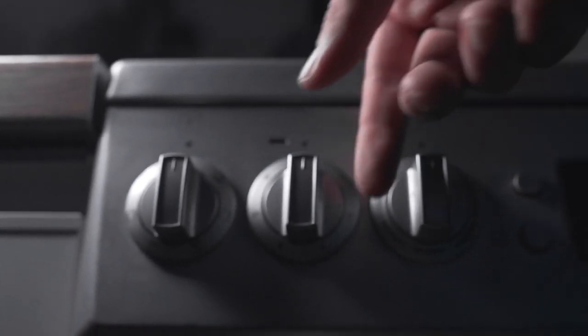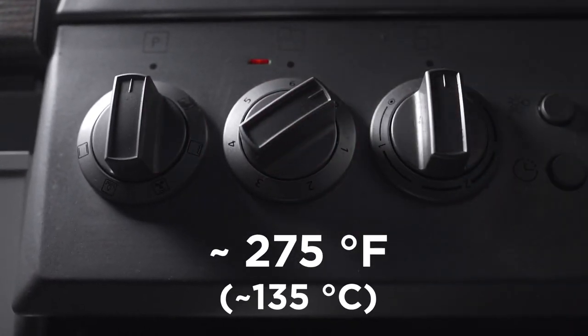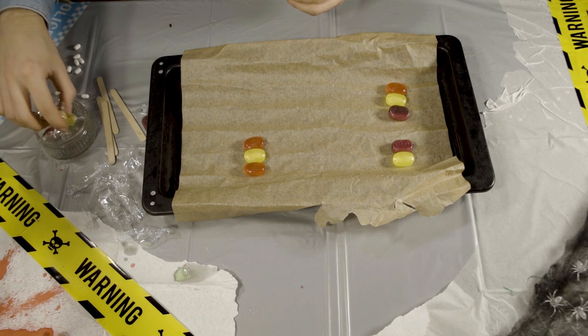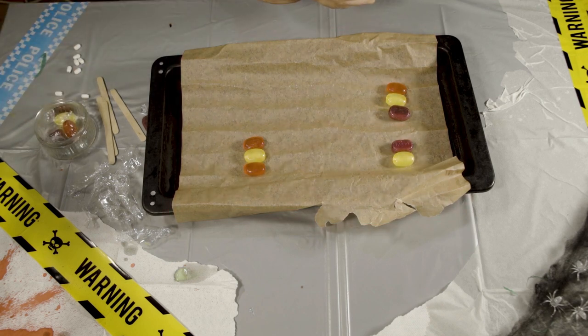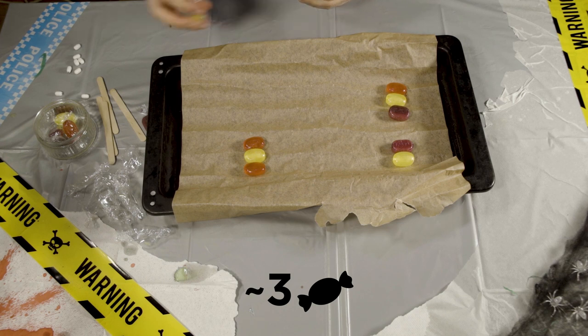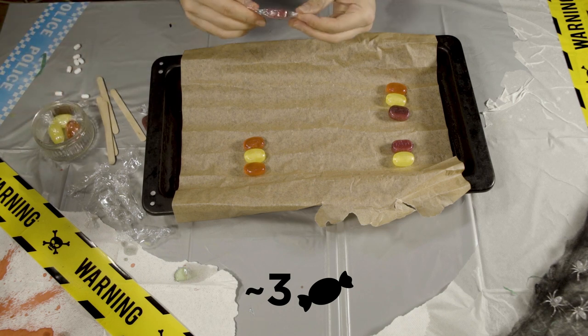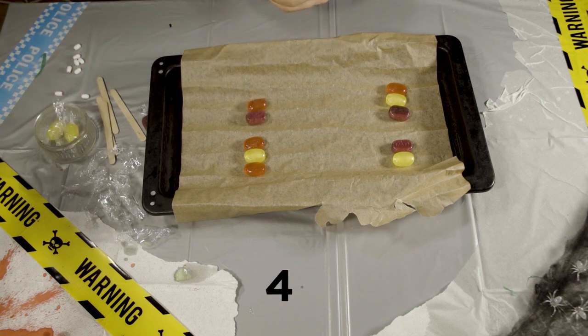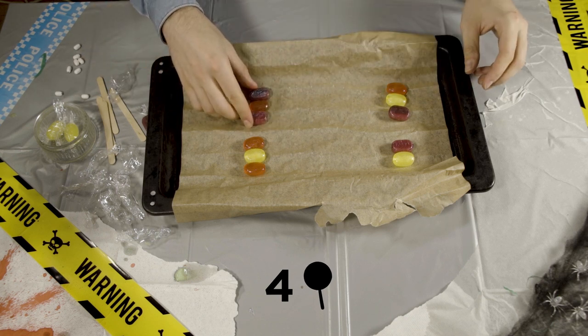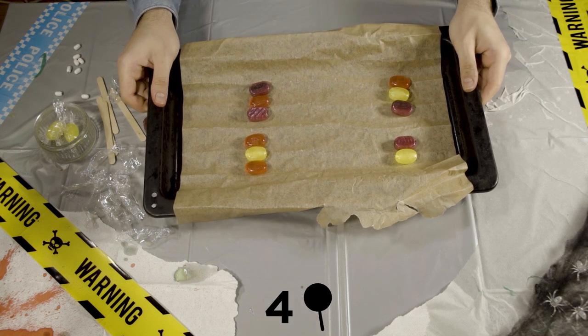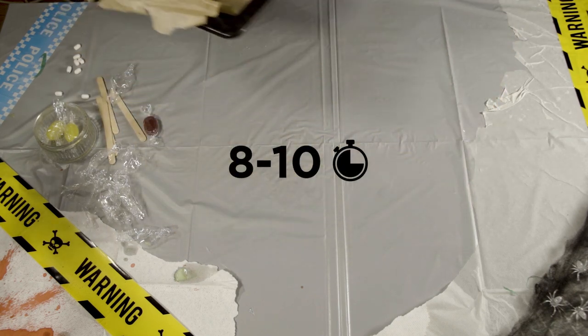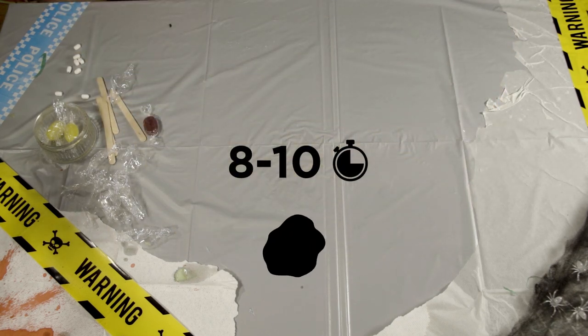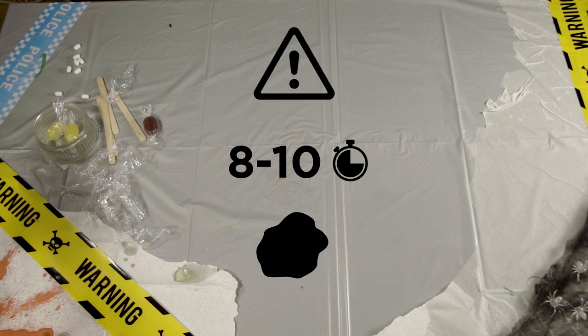First, preheat your oven to around 275 degrees Fahrenheit and cover a baking tray with parchment paper. For each Monster, you're gonna need about three candies. Just choose your favorite colors and place them next to each other so they're touching. You should be able to fit about four lollipops on one tray. Just make sure to leave enough room to add the sticks later. Pop the tray in the oven for eight to 10 minutes, or until the candies have melted to your liking. But keep an eye out so they don't completely turn into a liquid.